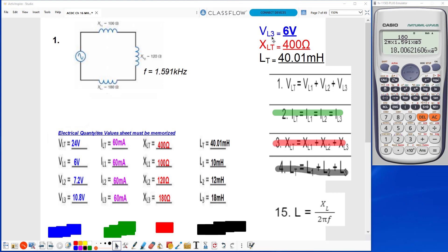So those values are VL3 is 6 volts, XLT is 400 ohms, and LT is 40.01 millihenries. Inductance is measured in henries.